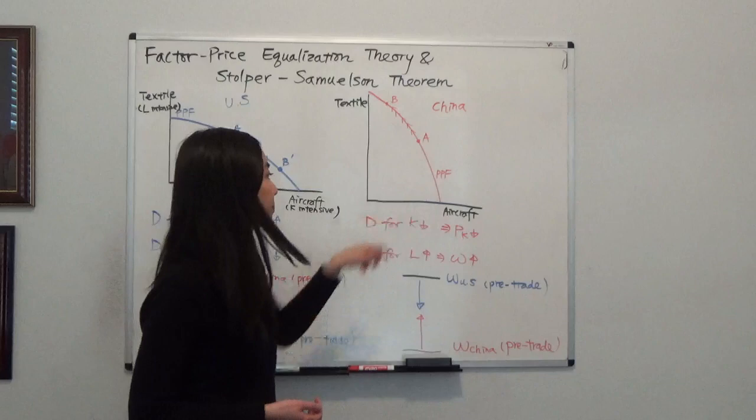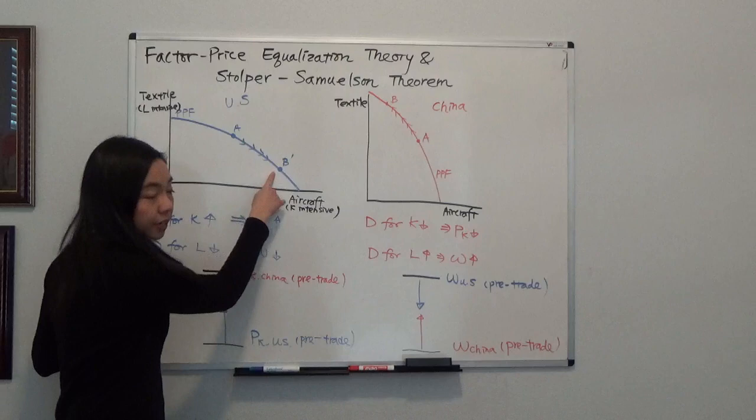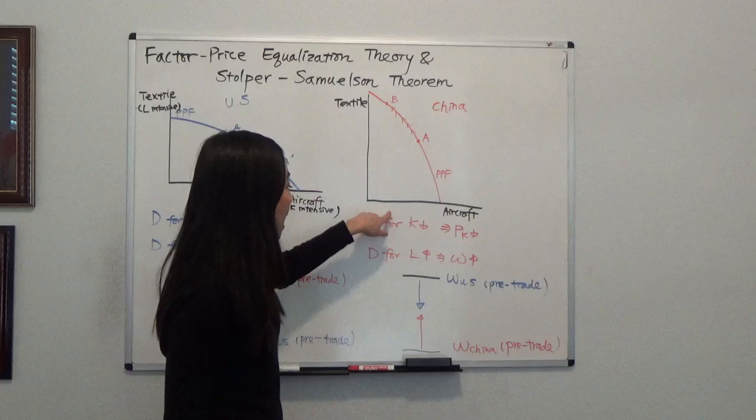After the two countries start to trade, they partially specialize. The U.S. moved from point A to point B prime, so now the U.S. is producing more aircraft and less textile. Whereas China is moving from point A to point B, where they produce more textile and less aircraft.